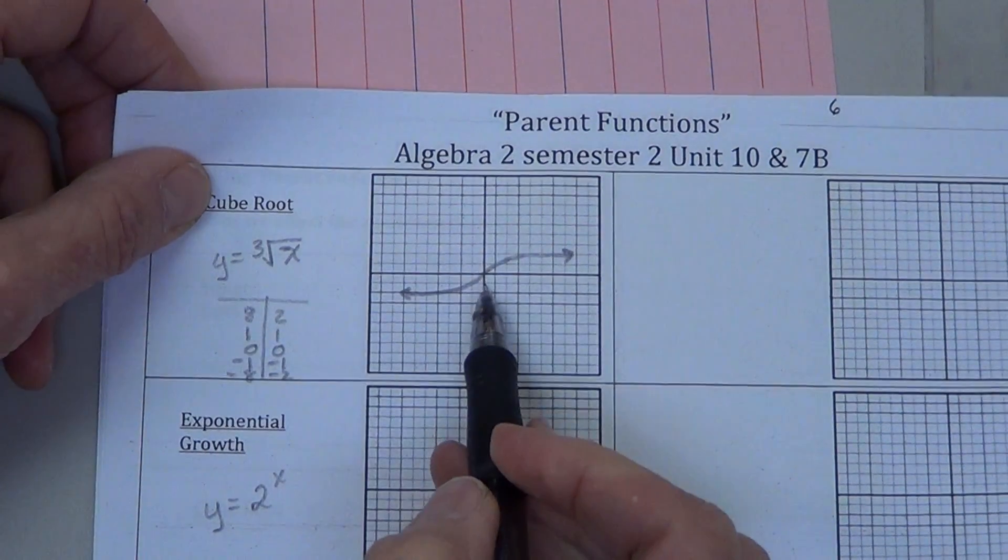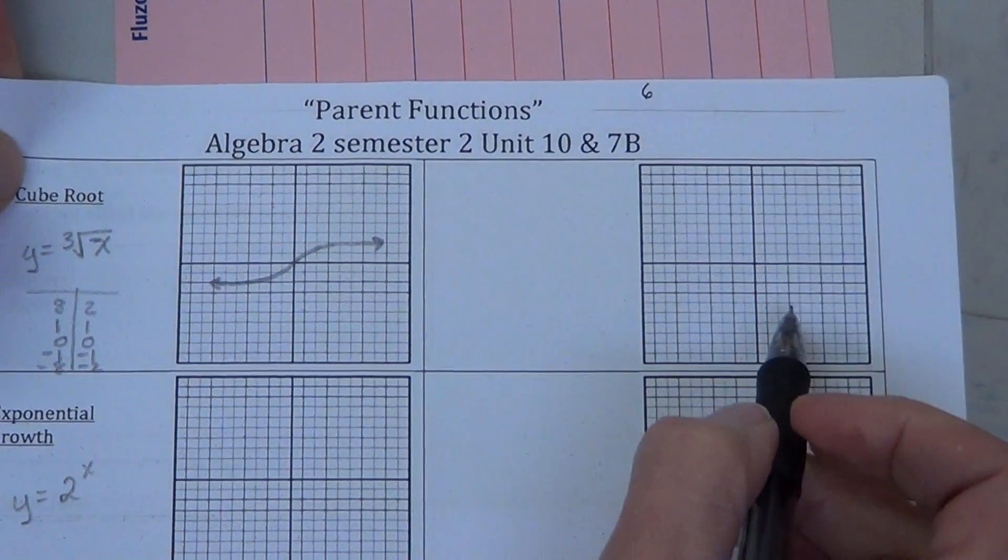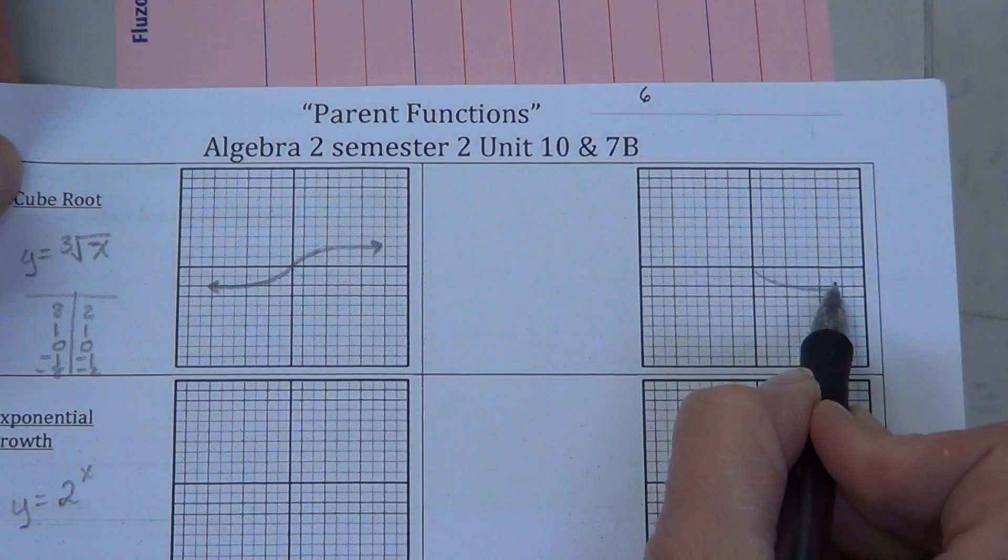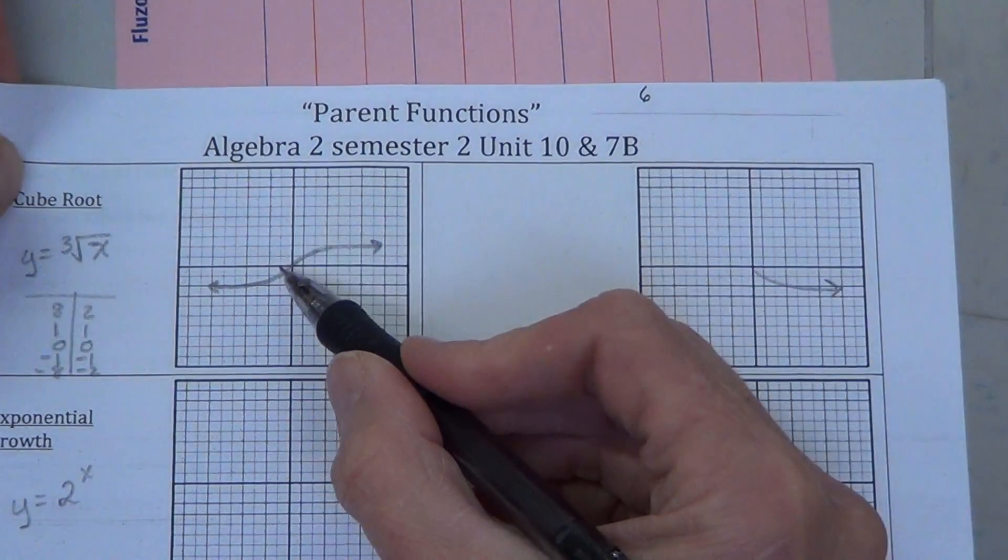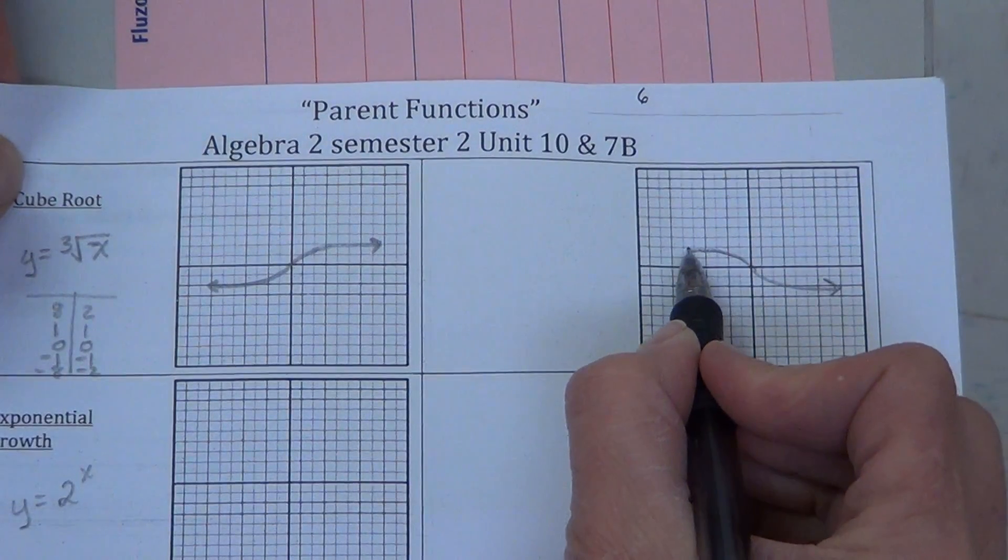Now we want a reflection. So we can picture that right here. We're going to take this one, flip it over the x-axis. It comes down like that. We take that one, flip it over the x-axis. It comes up looking like that.